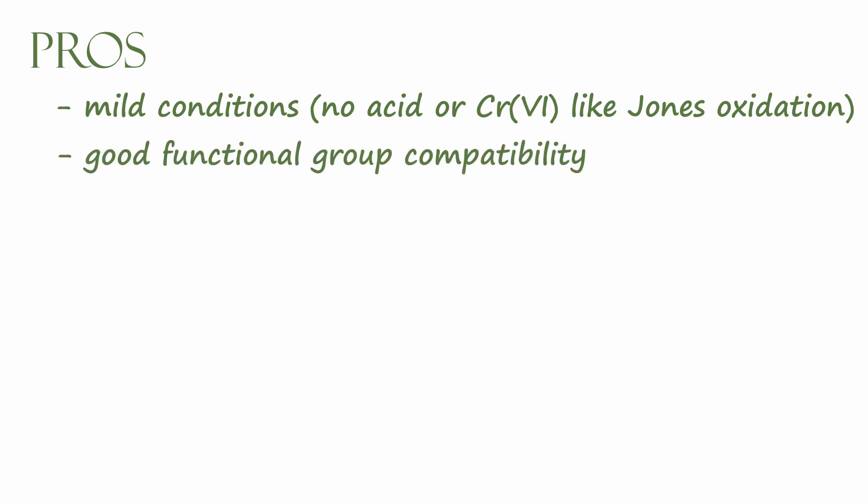One important advantage of this reaction is that it only involves mild conditions. So unlike for example the Jones oxidation, which involves the use of sulfuric acid, the Swern oxidation doesn't involve any strong acids, and is therefore compatible with a wide variety of functional groups. The lack of aqueous acid in this reaction also allows us to avoid over-oxidation of aldehydes to carboxylic acids, which we might encounter in the Jones oxidation. So therefore, we can cleanly make aldehydes from this process as well as ketones, without worrying about over-oxidation.